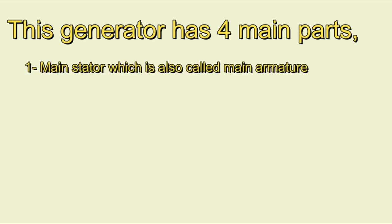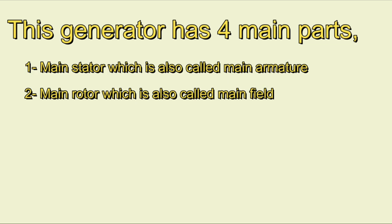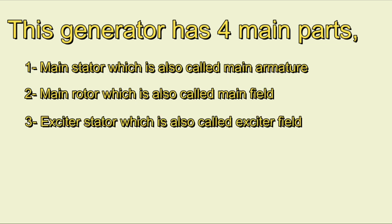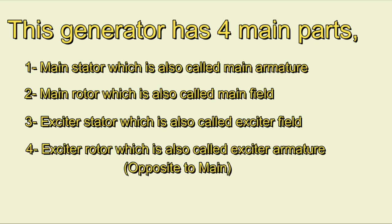This generator has four main parts: main stator, which is also called main armature; main rotor, which is also called main field; exciter stator, which is also called exciter field; and exciter rotor, which is also called exciter armature — opposite to main.